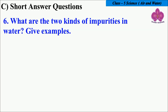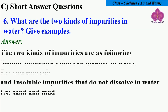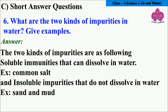What are the two kinds of impurities in water? Give examples. The two kinds of impurities are: first, soluble impurities that can dissolve in water — example, common salt; and second, insoluble impurities that do not dissolve in water — example, sand and mud.